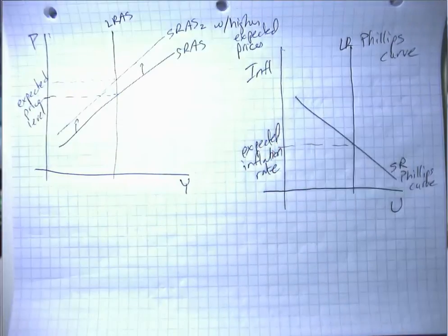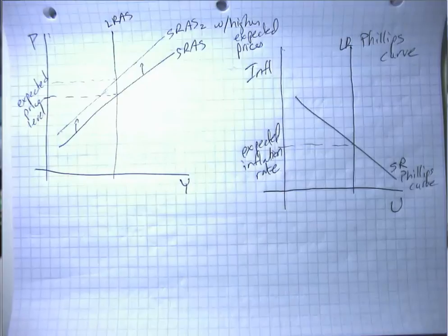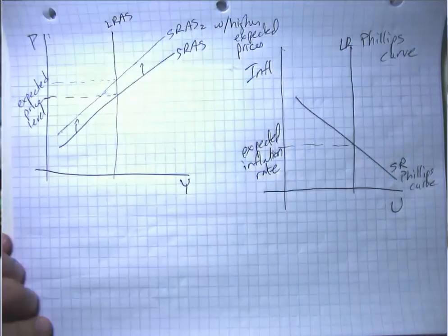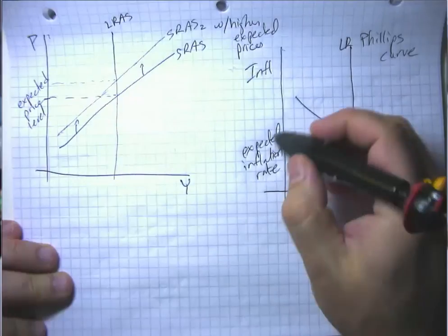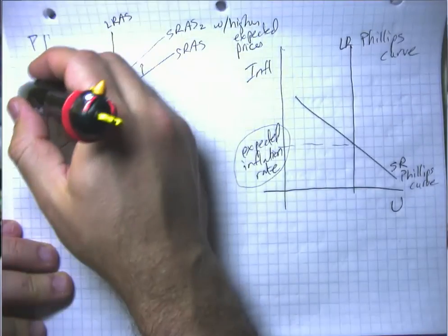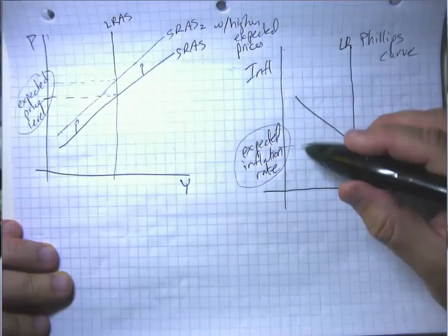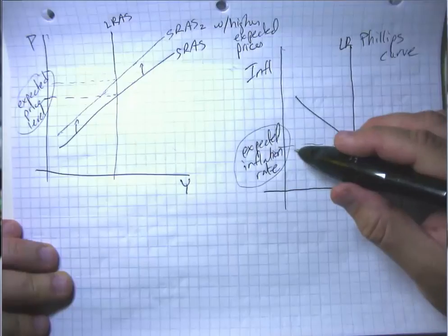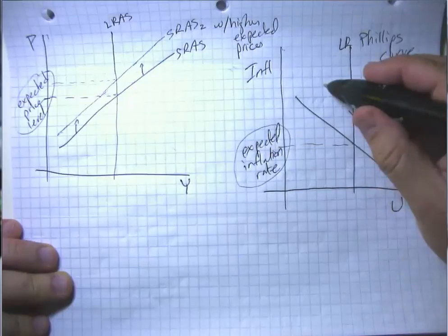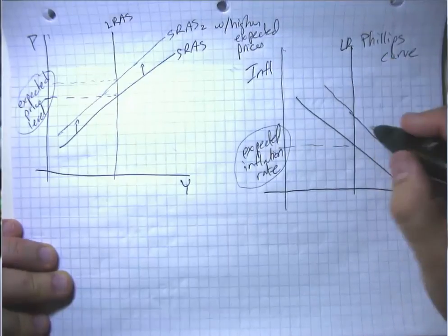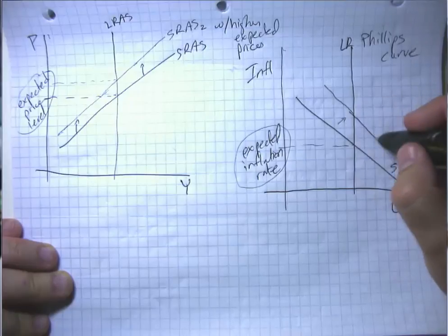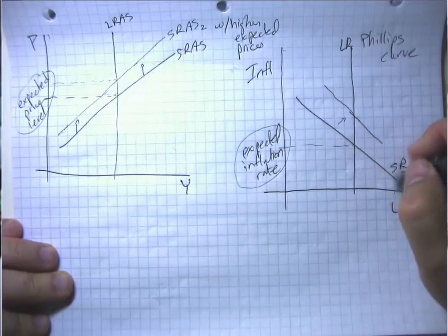So this is why central banks and other sort of economic policymakers spend a lot of time worrying about expected inflation or the expected price level because we end up having something of a self-fulfilling prophecy. If expected inflation goes up, then this point of intersection shifts up and we actually get a worse trade-off. We get either more inflation or more unemployment or both.